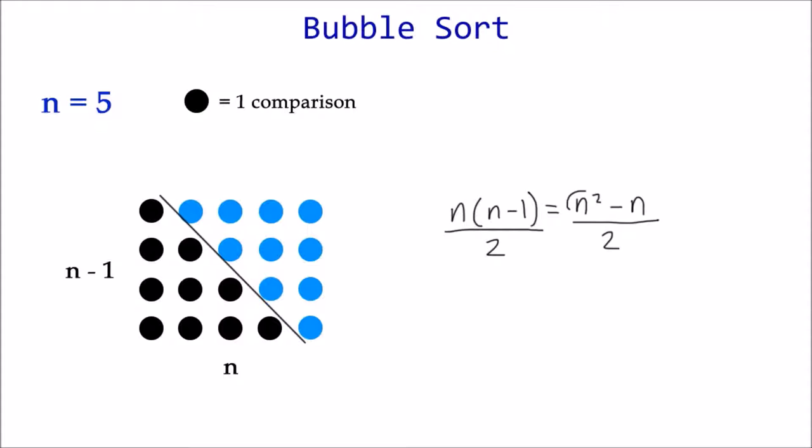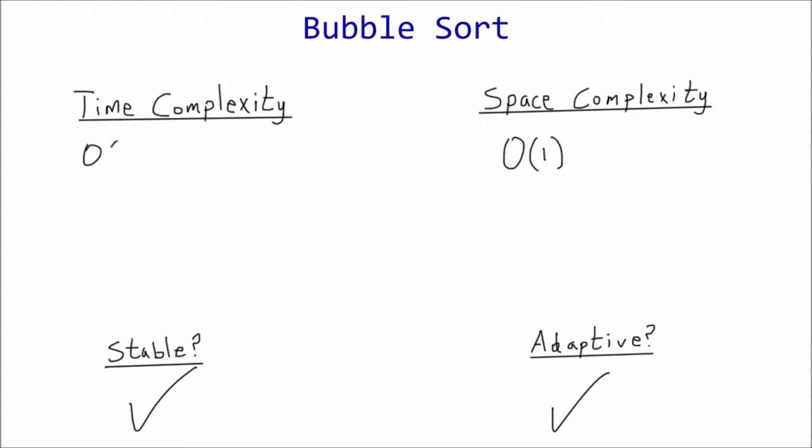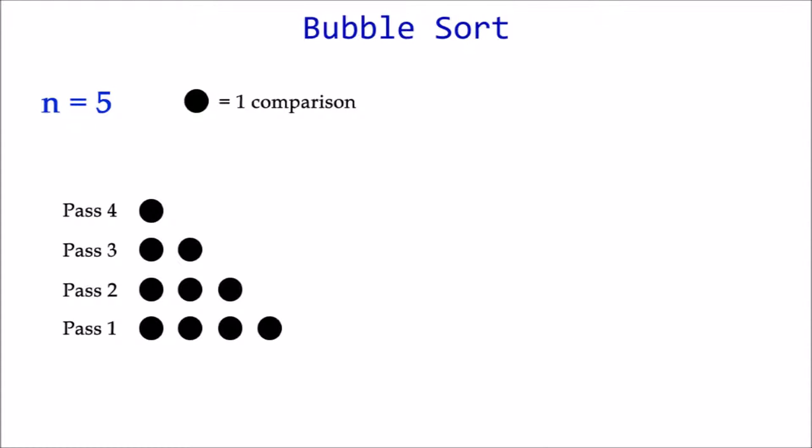Big O notation only cares about the highest order term of the polynomial. So worst case is Big O of n squared. Now for the best case. The best case scenario occurs when the list is already sorted. After one pass, the algorithm discovers this and exits early. In that case, only n minus 1 comparisons are made.